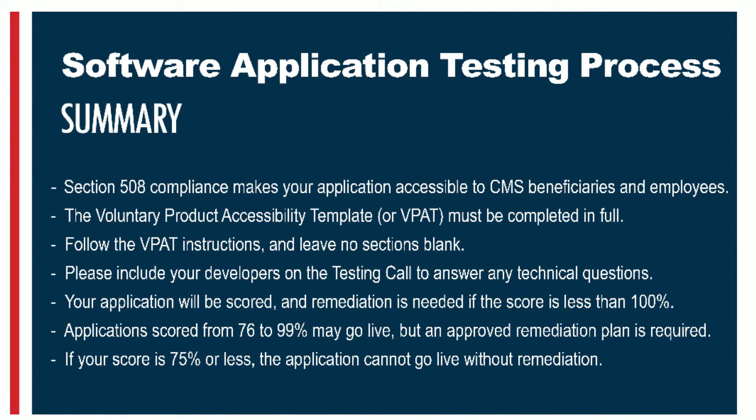Your application will be scored, and remediation is needed if the score is less than 100%. If your application is scored between 76% and 99%, it may be allowed to go live; however, an approved remediation plan is required and remediation activities must be completed. If your score is 75% or less, the application cannot go live without remediation.